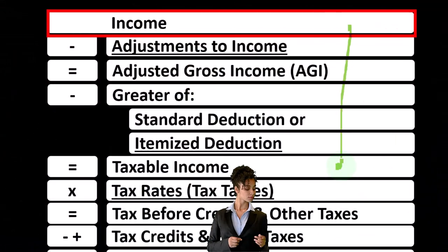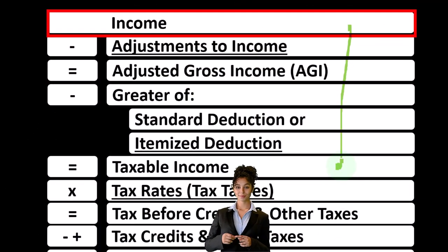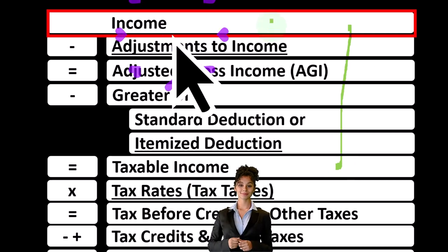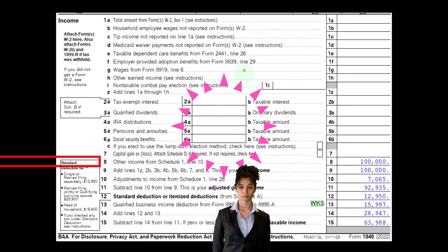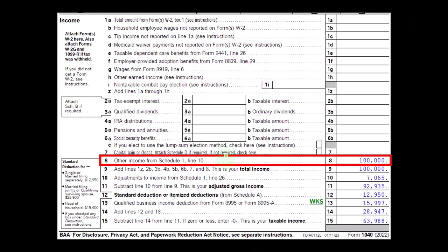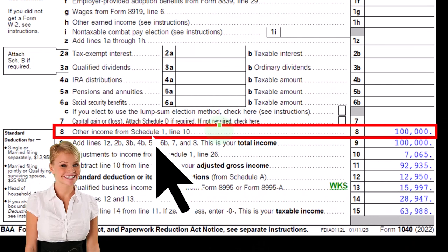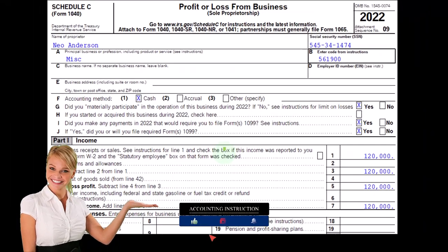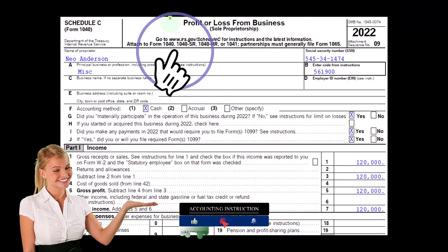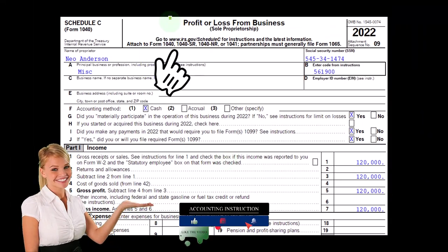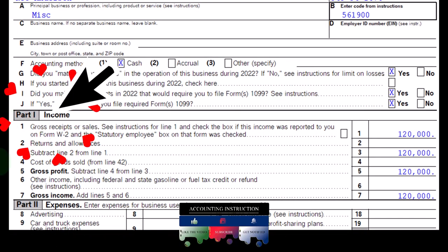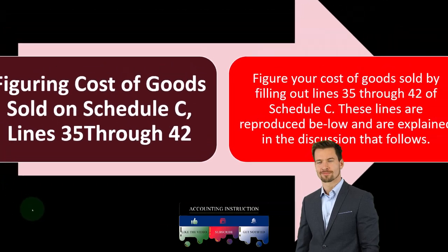Business Income minus Business Expenses — the net then rolling in from Schedule C to Line 1 Income of the income formula on page 1 of Form 1040. The Schedule C flows into Schedule 1, then into Line 8 of the Form 1040. The Schedule C — Profit or Loss from Business — is in essence an income statement with income and expense categories. Now we want to talk about figuring cost of goods sold on Schedule C lines.